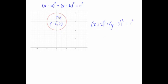So the equation of this circle would be x plus 2, all squared, plus y minus 3, all squared, equals 1 squared, or equals 1 if you want to square it.